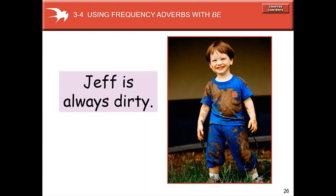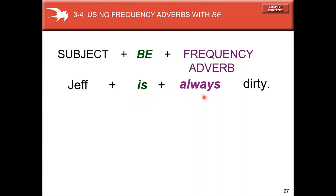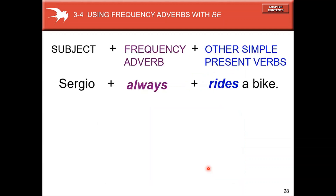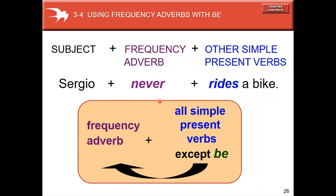Now: using frequency adverbs with the verb 'be.' 'Jeff is always dirty.' When using 'be,' you put the frequency adverb after 'be' — not before. Compare: 'Sergio always rides a bike' — here the frequency adverb goes between the subject and the main verb.